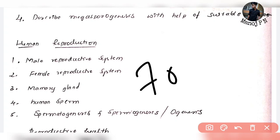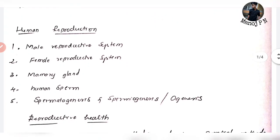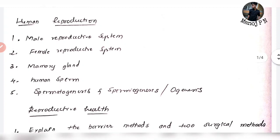You will find it in your 70 marks, and it will be out of 140 marks. Biology is very important — if you have to get into the biology sector, then bio is important. Human reproduction covers the male reproductive system, female reproductive system, human sperm, spermatogenesis, and mammary gland. Our average score is 85 or 86.